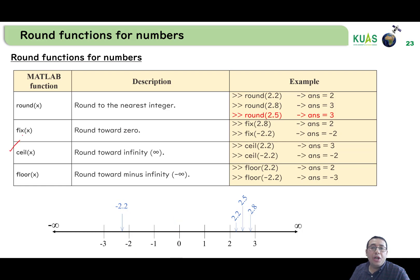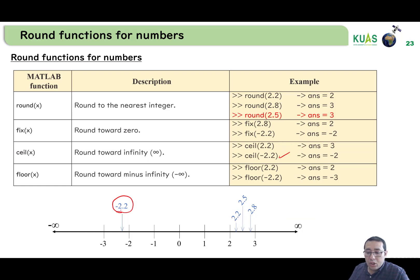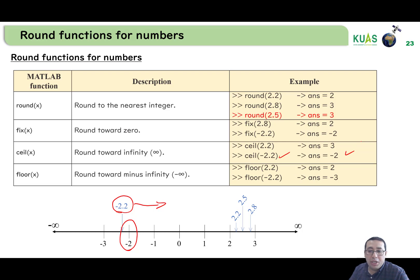The third rounding function is ceil, which rounds towards positive infinity. So ceil(2.2) — although 2 is the closest integer, ceil finds the nearest integer in the infinity direction, so the answer is 3. And for ceil(-2.2), going in the positive infinity direction, the nearest integer is -2, so ceil(-2.2) returns -2.